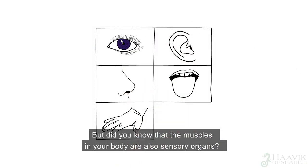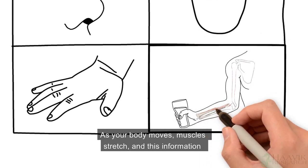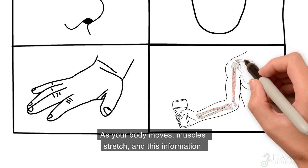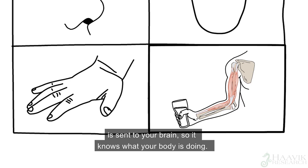But did you know that the muscles in your body are also sensory organs? As your body moves, muscles stretch and this information is sent to your brain so that it knows what your body is doing.